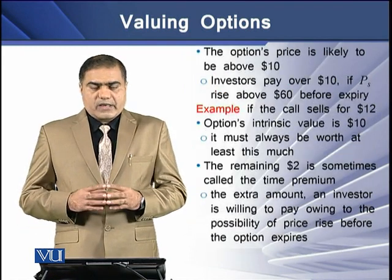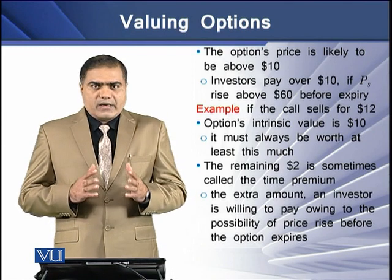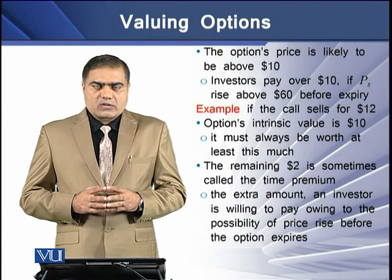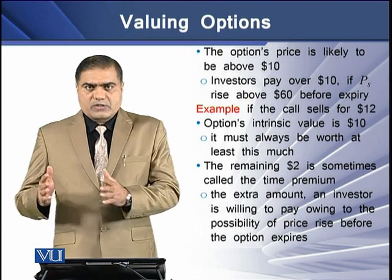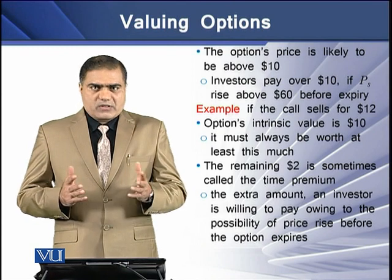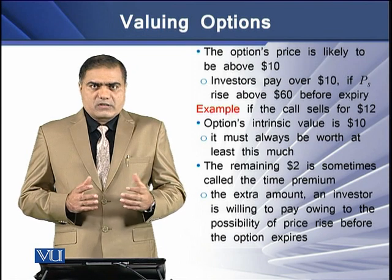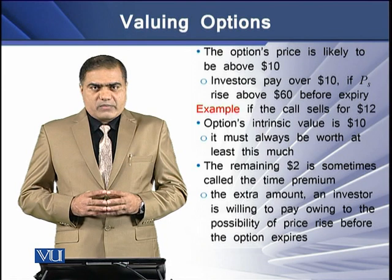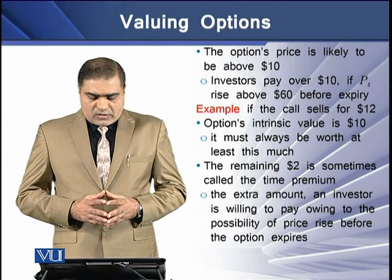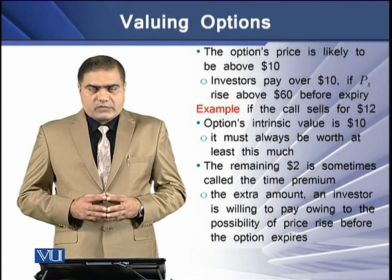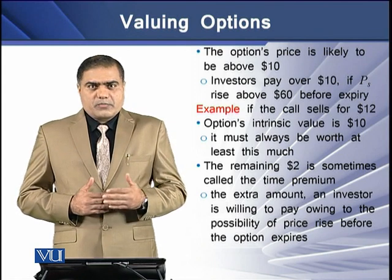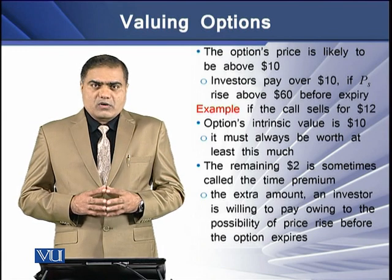The option price is likely to go above $10, and a rational investor will pay over $10 only if the price of the underlying stock is expected to go above $60 before the expiration date. For example, if the call sells for $12, the option's intrinsic value is $10 and the remaining $2 is termed a time premium — the extra amount the investor is willing to pay due to the possibility that the stock price will go higher.